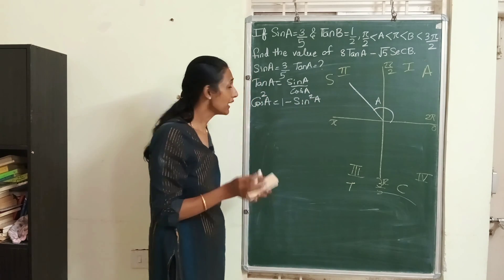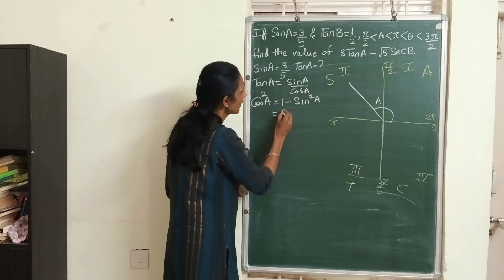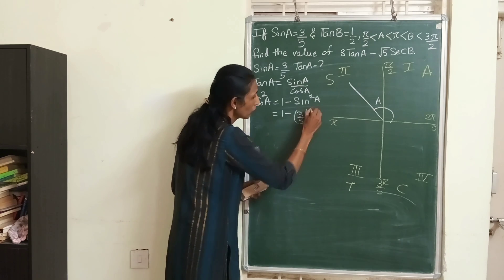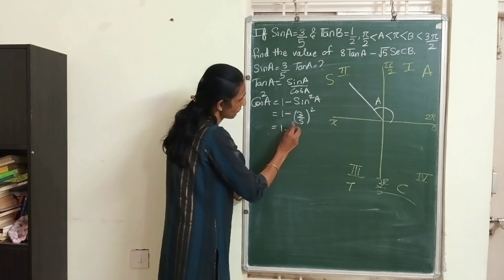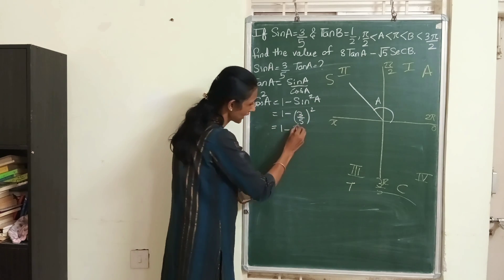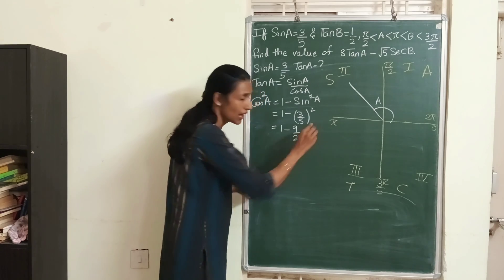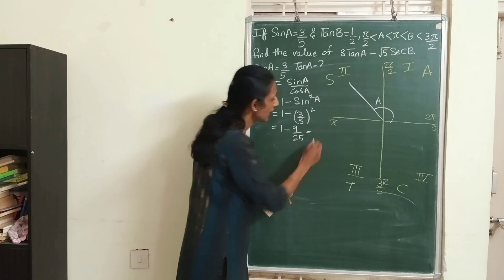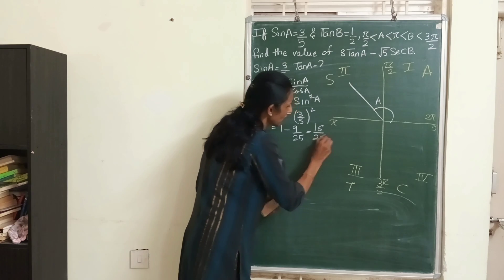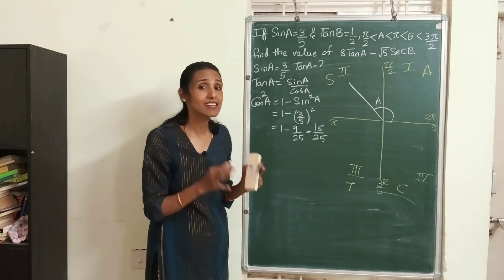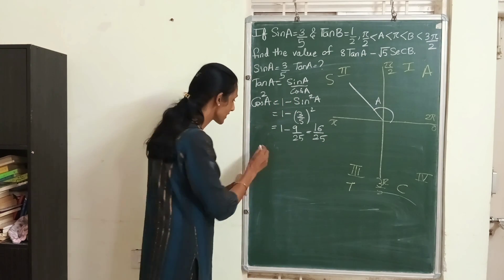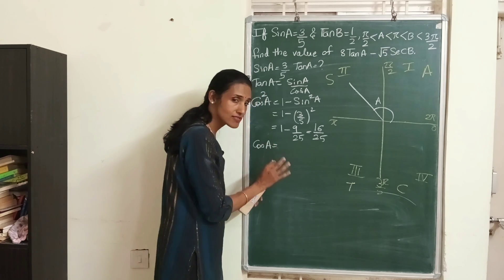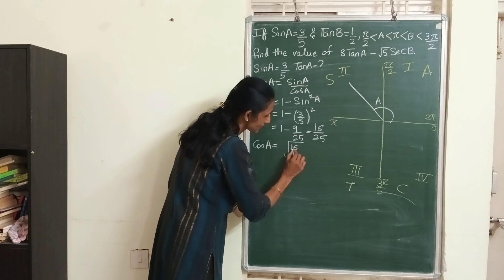What is the relation between cos and sin? There is an identity: cos²A = 1 − sin²A. We know sin A is 3/5, so let's substitute: it is 1 minus (3/5)² = 1 − 9/25. Taking the LCM, I get (25 − 9)/25 = 16/25. So cos²A = 16/25.